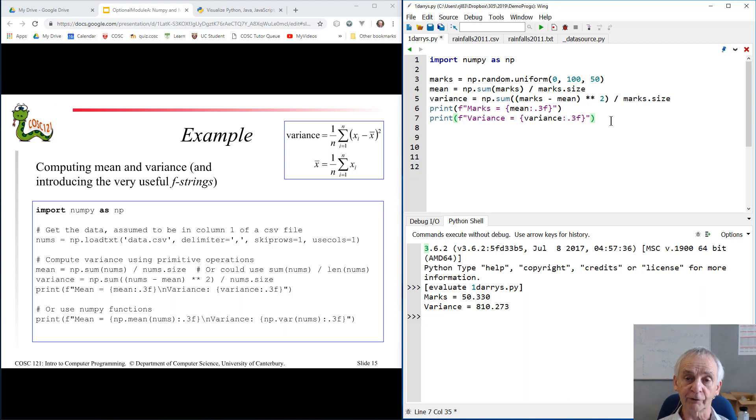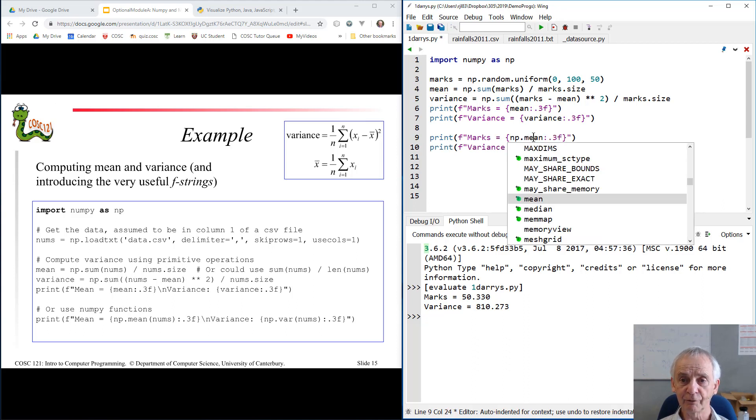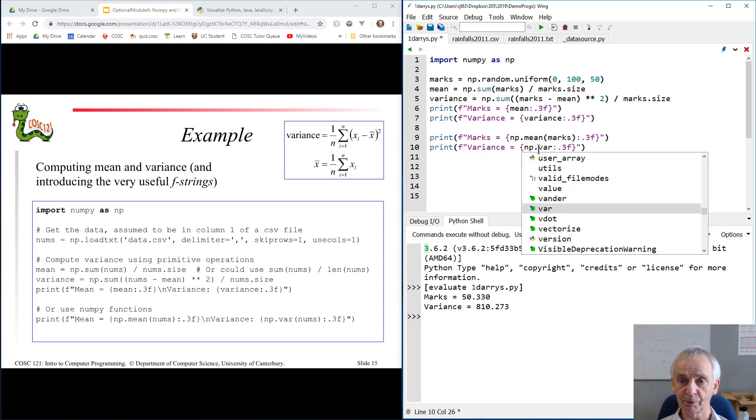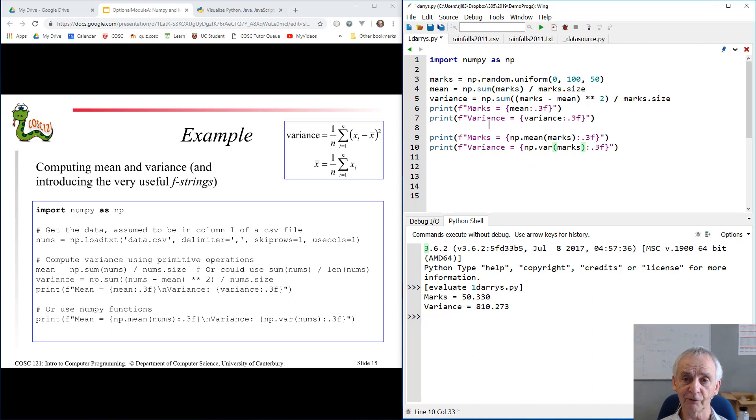NumPy has its own functions to compute these, so we'll run that again by copying those two format statements, so print statements, and replacing mean by the NumPy mean function applied to the marks, and the variance by the np.var function applied to the marks. That's obviously the way you do it. In practice, you don't want to reinvent the wheel, but I wanted to illustrate the power of the arithmetic operations on NumPy arrays. So hopefully I get the same answers, printed twice. It looks like I did. What we do, it worked.